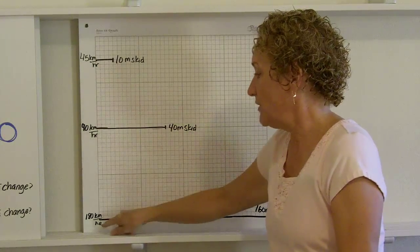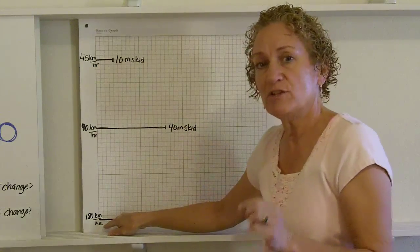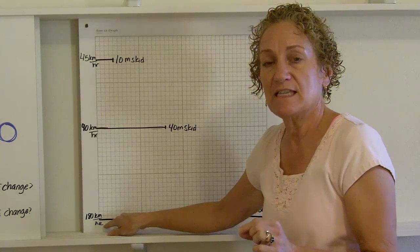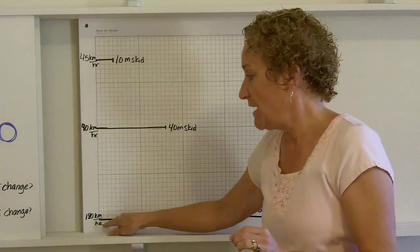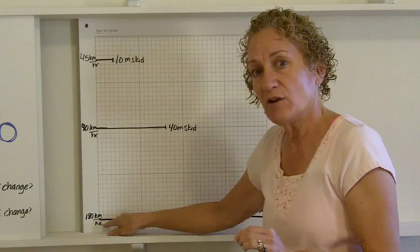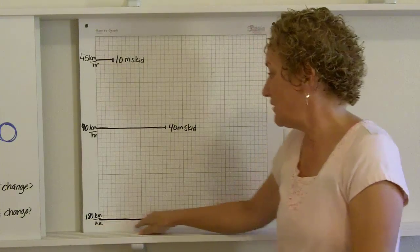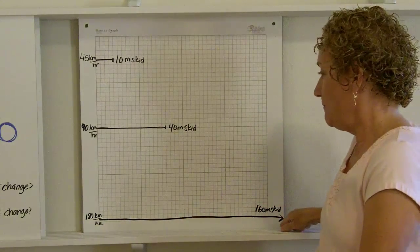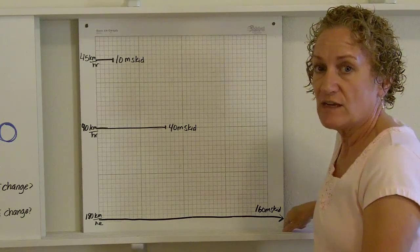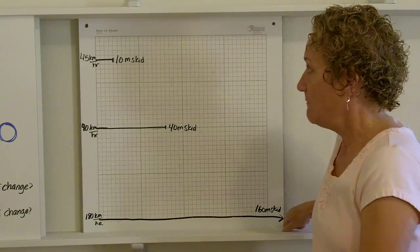If you double it again, or you're four times your original, if you're four times your original, four times four is 16. Four squared is 16. That means at 180 kilometers per hour, it's going to take about 160 meters worth of skidding. I couldn't even fit it on my board, 160 meters.